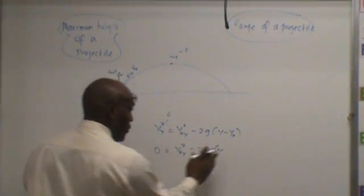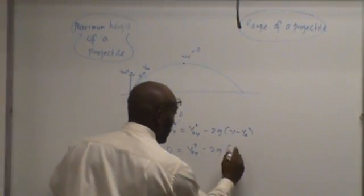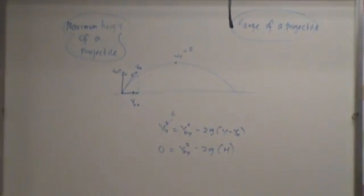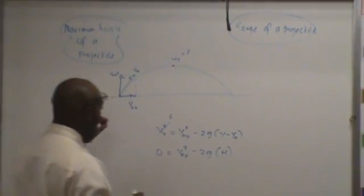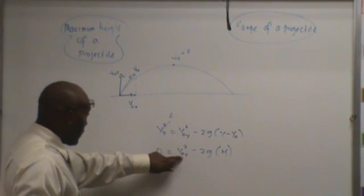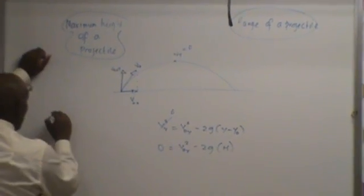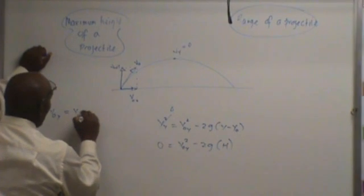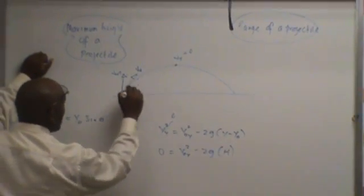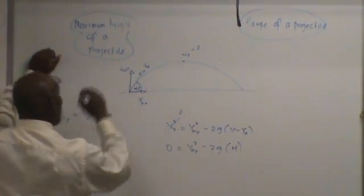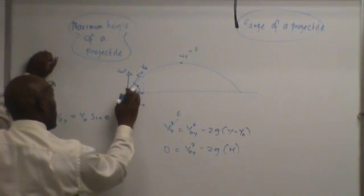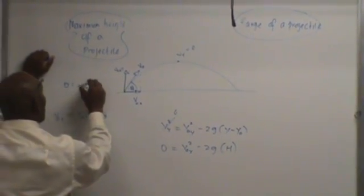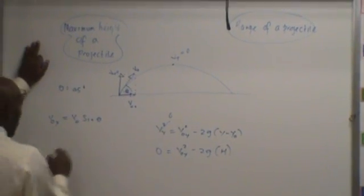Let's call this h for maximum height. Because that's how height is going to go. So now we need to find out what v₀y is. v₀y is v₀ sine theta. What's this angle? 45 degrees. Here's theta — theta equals 45 degrees.